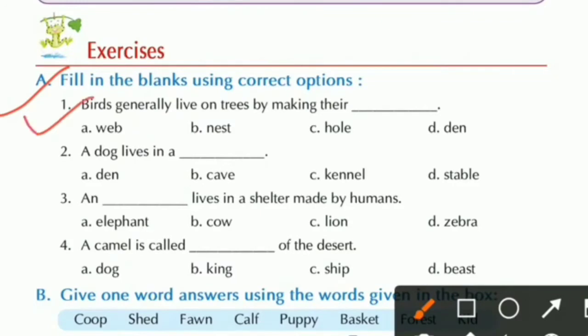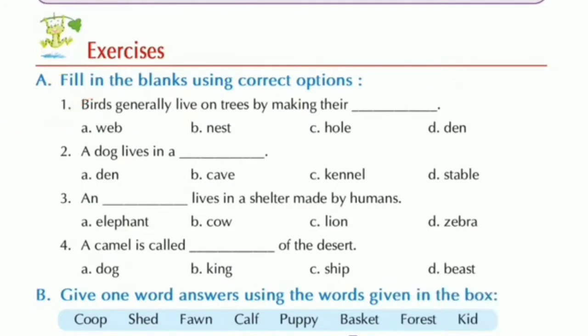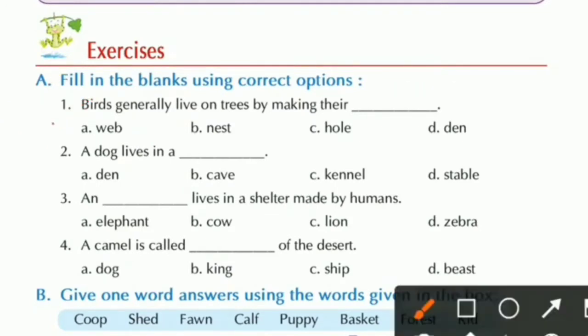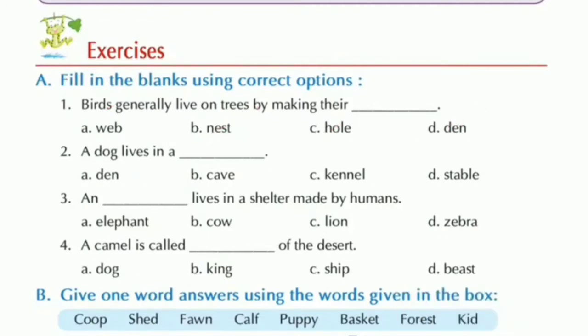Birds generally live on trees by making their dash. Options: web, nest, hole, or den. Answer: by making their nest. So the answer will be nest.